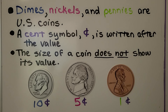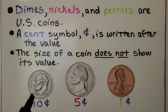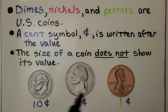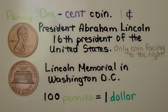Dimes, nickels, and pennies are U.S. coins. A cent symbol — that's this C with a line through it — is written after the value. And the size of a coin does not show its value. This is a dime; it's 10 cents and it's smaller in size than this nickel, which is worth 5 cents. And this dime is smaller in size than this penny, which is valued at 1 cent. So remember, the size of a coin does not show its value.